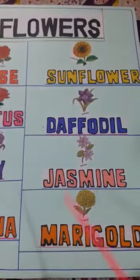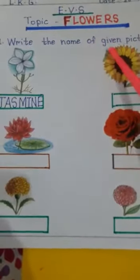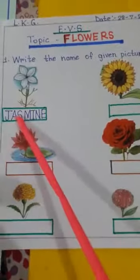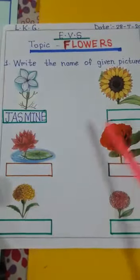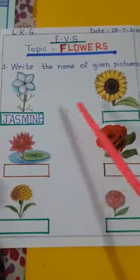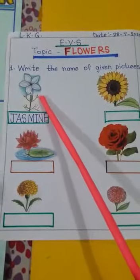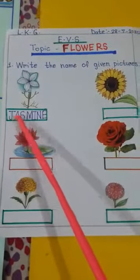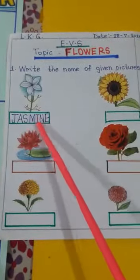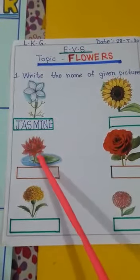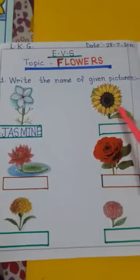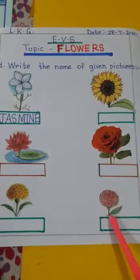It is time for homework. Question number one: write the name of the given pictures. These are the pictures of flowers. Recognize the pictures and write the name. One example is given here. J-A-S-M-I-N-E — Jasmine. Lotus. Marigold. Sunflower. Rose. Dahlia.